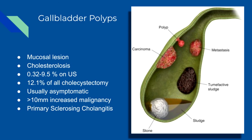Sonographically, you'll see an echogenic round lesion adherent to the gallbladder wall, and they will not have shadowing. There are two types: benign, with cholesterol being the most common.